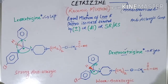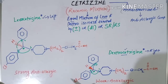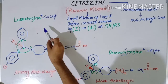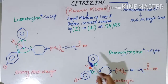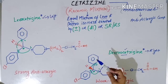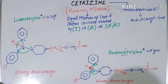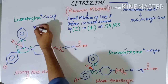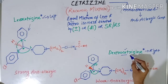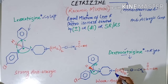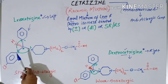The question arises: if cetirizine is a mixture of levo and dextro forms, and levo rotates plane polarized light to the left while dextro rotates it to the right, why do these two enantiomers rotate polarized light in opposite directions? The answer lies in their structure. Let us look at the structure of levocetirizine and then the structure of dextrocetirizine.